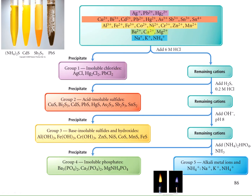For the group 2 ions, you add hydrogen sulfide in an acidic solution. Under acidic conditions, the sulfide concentration is relatively low. This is how you separate out the group 2 ions—these are the acid-insoluble sulfides that precipitate out as sulfide complexes with very poor solubility.